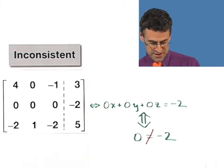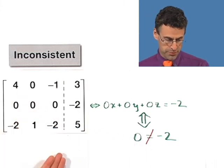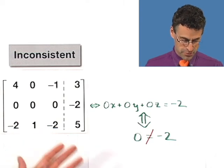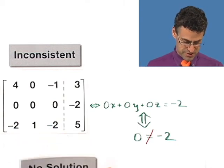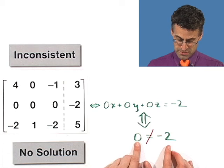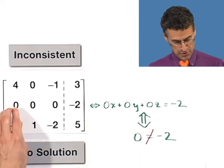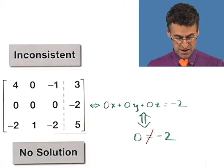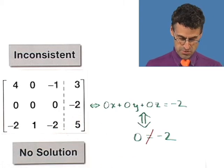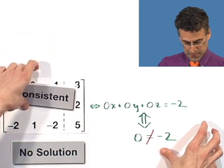When you have an inconsistent system where you work through and at every step you're creating something using just the row operations and you produce something that is known to be false, then you have no solution. So here's an example where there's no solution when you have all zeros on this side and then a non-zero thing there. You know it's no good. Now, another thing that could happen.